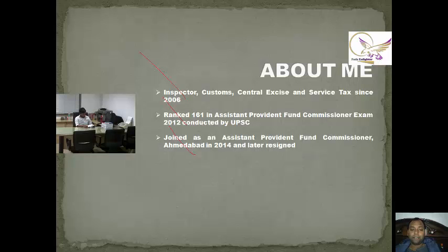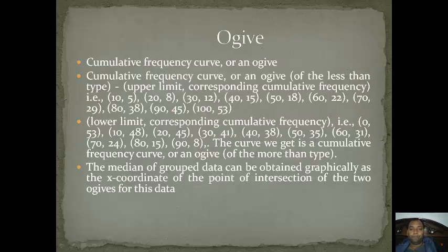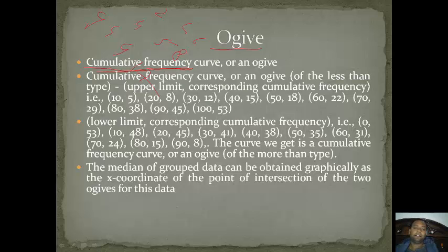Coming to the topic: what is an Ogive? We have seen previously in the chapter what cumulative frequency is. To remind you, suppose data is given as 2, 4, 6 and frequency is 4, 5, 8 — so cumulative frequency becomes 4, then 9, then 17. When we plot it on a graph it becomes a cumulative frequency curve or an Ogive. Ogive is of two types: less than type and more than type. In less than type, it is the upper limit corresponding cumulative frequency; in more than type, it is the lower limit corresponding cumulative frequency.